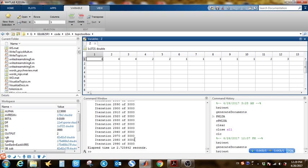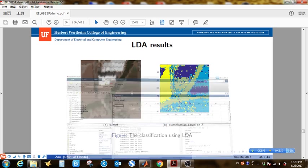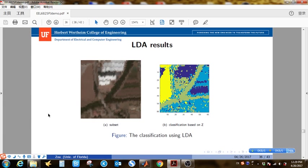So it converges very fast. And Z is the topic assignment for each word. So we have a total of four topics. This is how I generate the classification map.